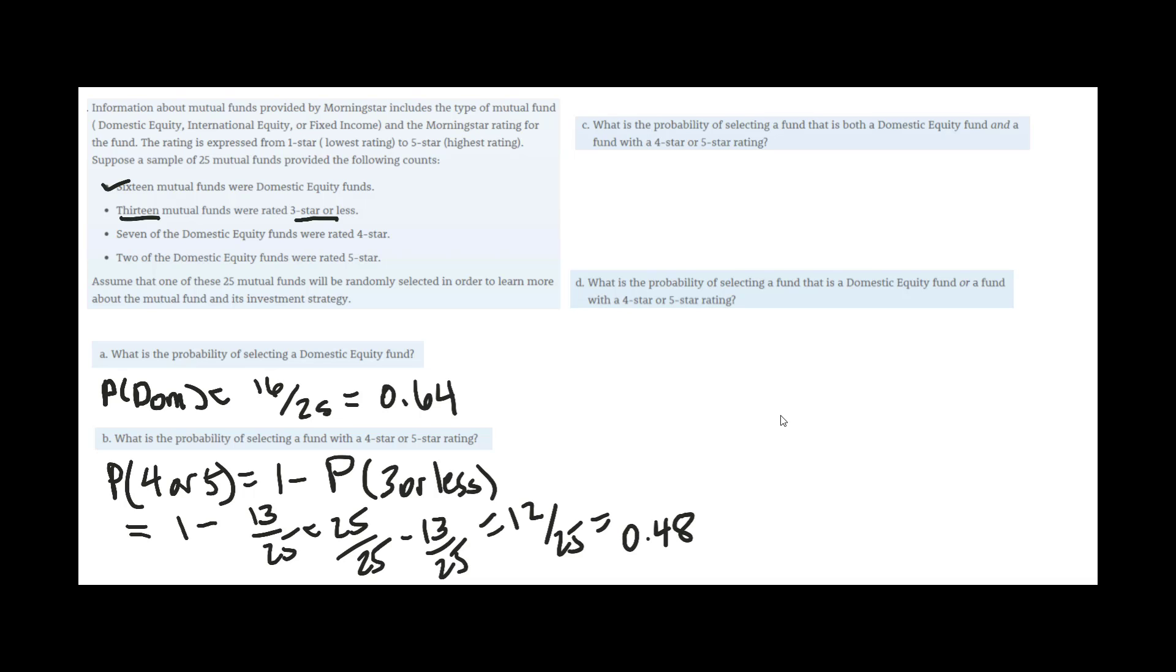Then it says what is the probability of selecting a fund that is both a domestic equity fund and a fund with a 4 star or 5 star rating. So both, then of the domestic equity and a 4 or 5 star are these two, the 7 and the 2.